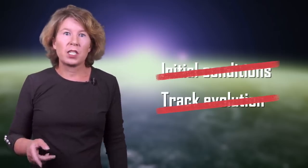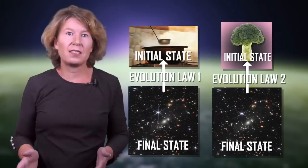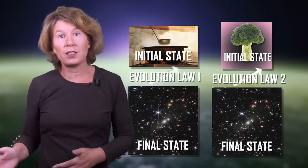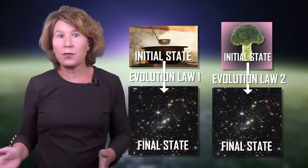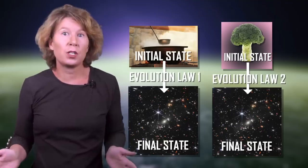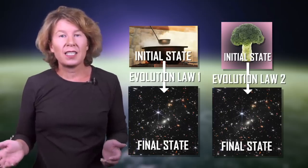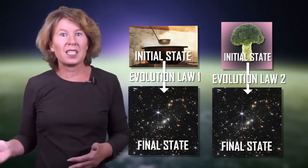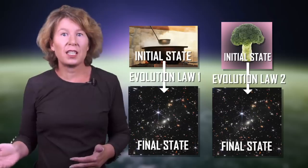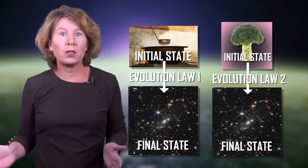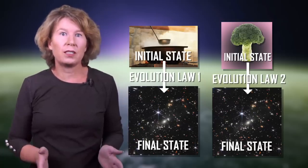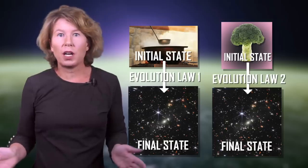That's a problem, because then you can take whatever equation you want and use it to calculate what happened earlier. And for each possible equation there will be some earlier state that, if you use the equation in the other direction, will agree with the final position and velocity that you observed. So it seems like in cosmology we can only test the combination of initial state and equation, but not find out what either is separately, and then we can't say anything about how the universe began.